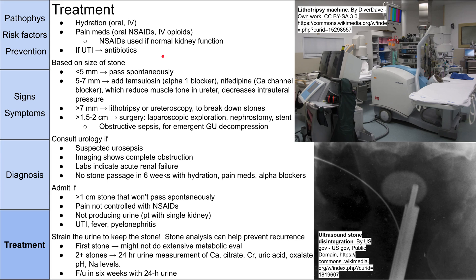The rest of treatment is based on stone size. Small stones less than five millimeters should pass spontaneously and can be managed outpatient with hydration and pain medications if needed. For stones five to seven millimeters, add the alpha-1 blocker Tamsulosin, which reduces muscle tone in the ureter and decreases intraureteral pressure to help the stone pass. Nifedipine, a calcium channel blocker, is another option.